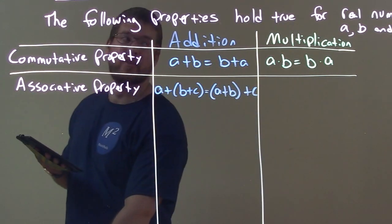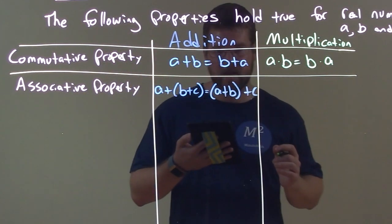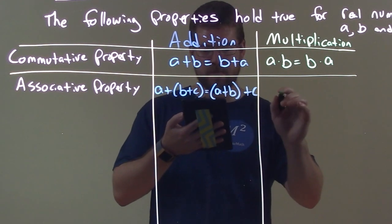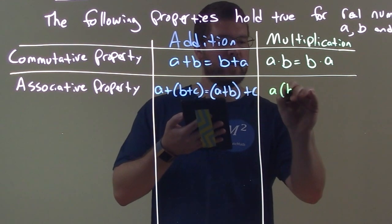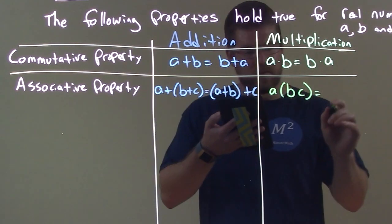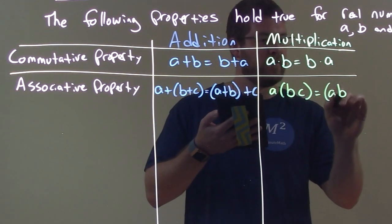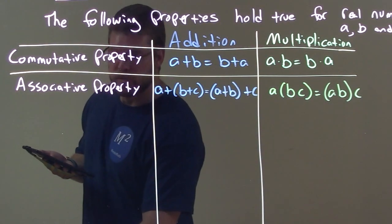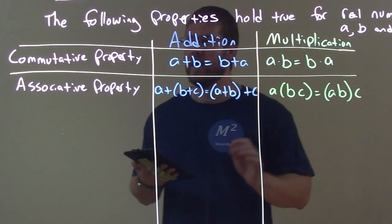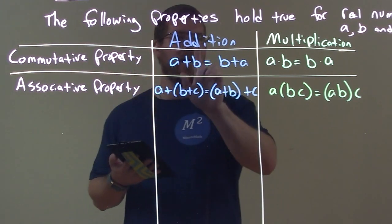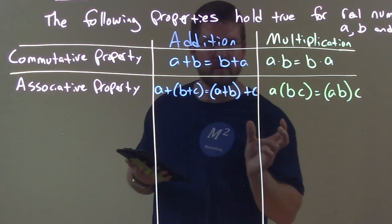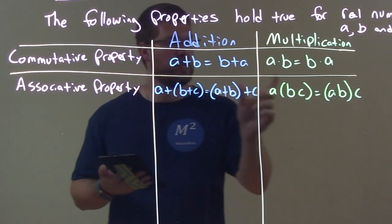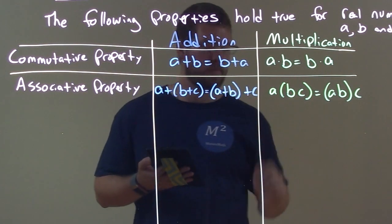Now we can apply that with multiplication — the associative property of multiplication. Same idea, just with multiplication: A times B times C is equal to A times B times C. Similar to the commutative property for addition and multiplication, the associative property works the same way but for addition and multiplication.